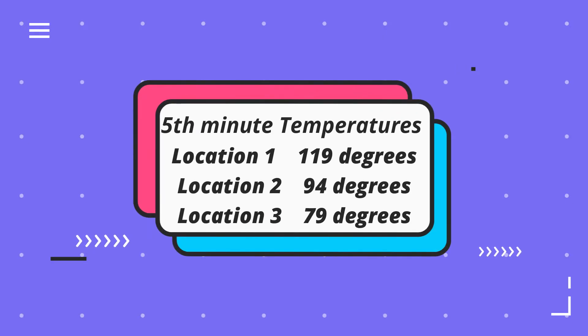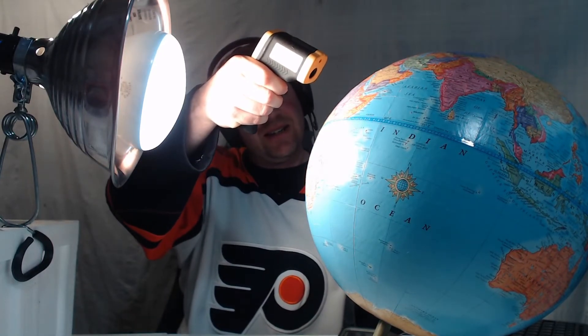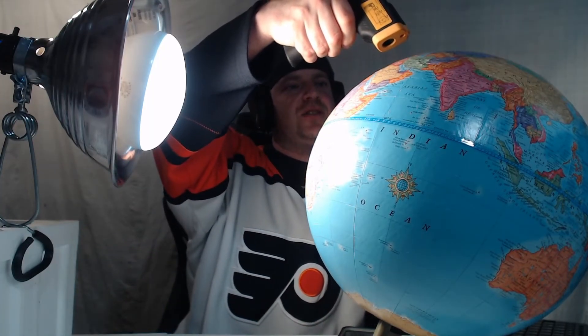This heat lamp is getting hot — it's warming the earth but also reflecting back and hitting me. At six minutes, the equator is still sitting right around 119 degrees, location two is at 94 degrees, and location three is still at 79 degrees — it looks like temperatures are beginning to plateau.